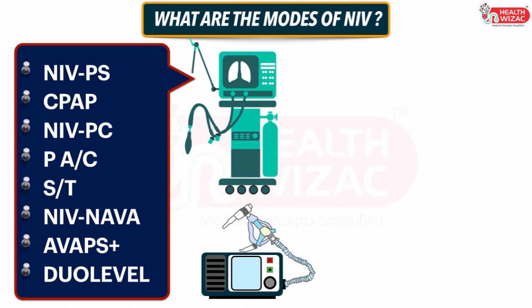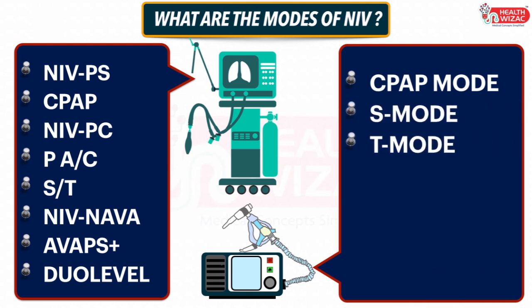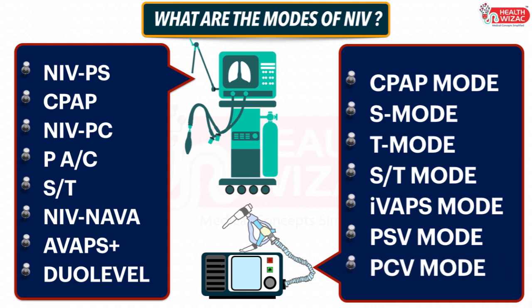On the other hand, if a BiPAP machine is used for non-invasive ventilation, then we may see the following modes: CPAP mode (Continuous Positive Airway Pressure mode), S mode (Spontaneous mode), T mode (Time mode), ST mode (Spontaneous Time mode). Apart from this, some advanced BiPAP machines may have IVAPS (Intelligent Volume Assured Pressure Support mode), PSV mode (Pressure Support Ventilation mode), and PCV mode (Pressure Control Ventilation mode).